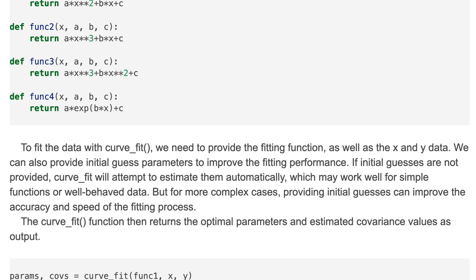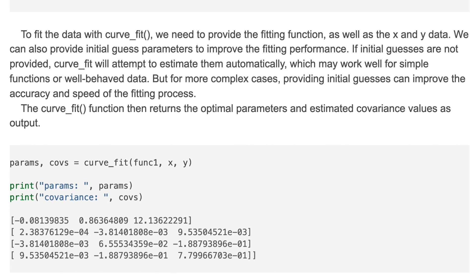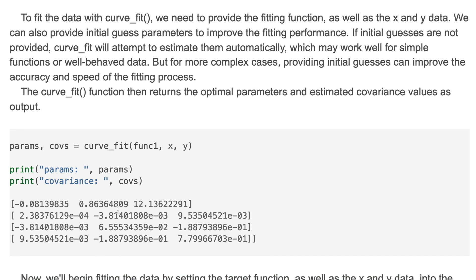The curve_fit function then returns the optimal parameters and estimated covariance values as output. Here is an example of using the curve_fit function. Here we have to provide the fitting function and x and y data, and it returns parameters and the covariance value. You can check the outputs here.